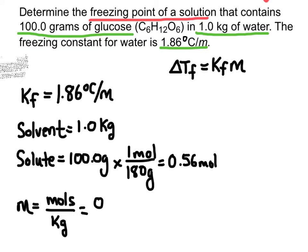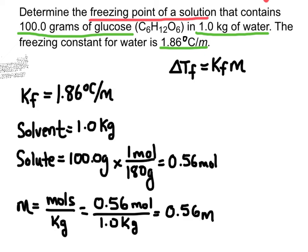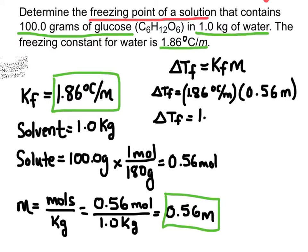Now I can calculate the molality by dividing moles of solute by kilograms of solvent: 0.56 divided by 1 gives 0.56 molal. Plugging the constant and molality into the equation gives a change in freezing point of 1.03 degrees Celsius. The delta symbol means change in freezing point. Since the original freezing point of water is 0 degrees, I subtract this change to get a final freezing point of negative 1.03 degrees Celsius.